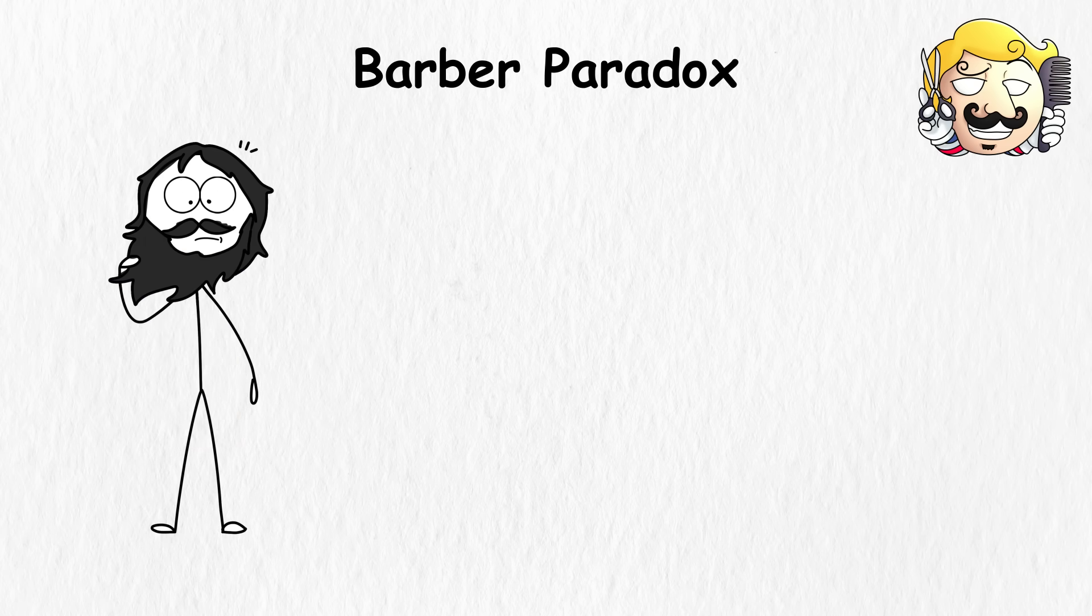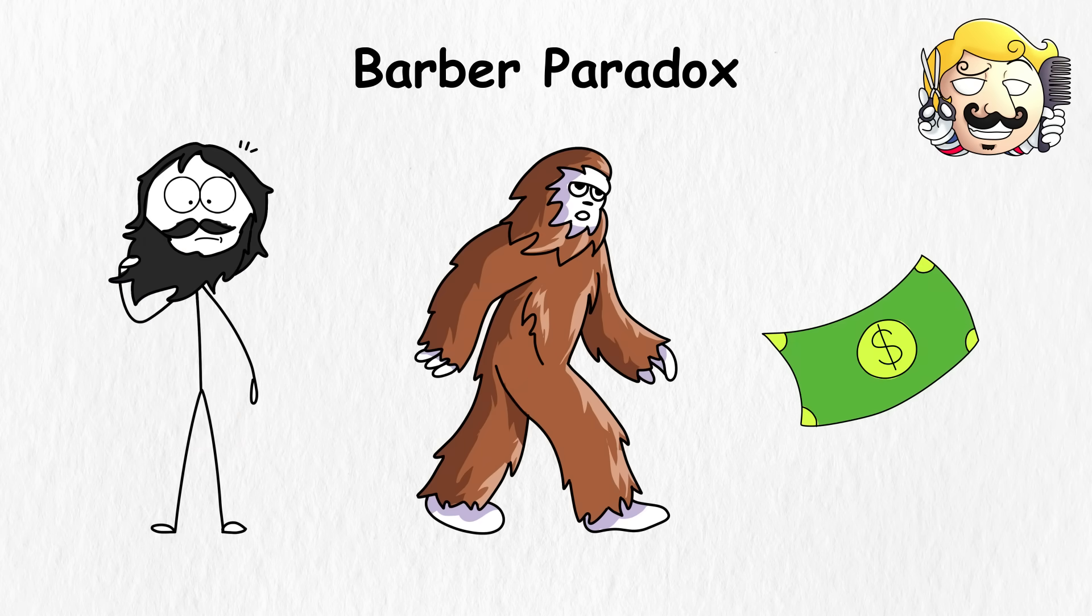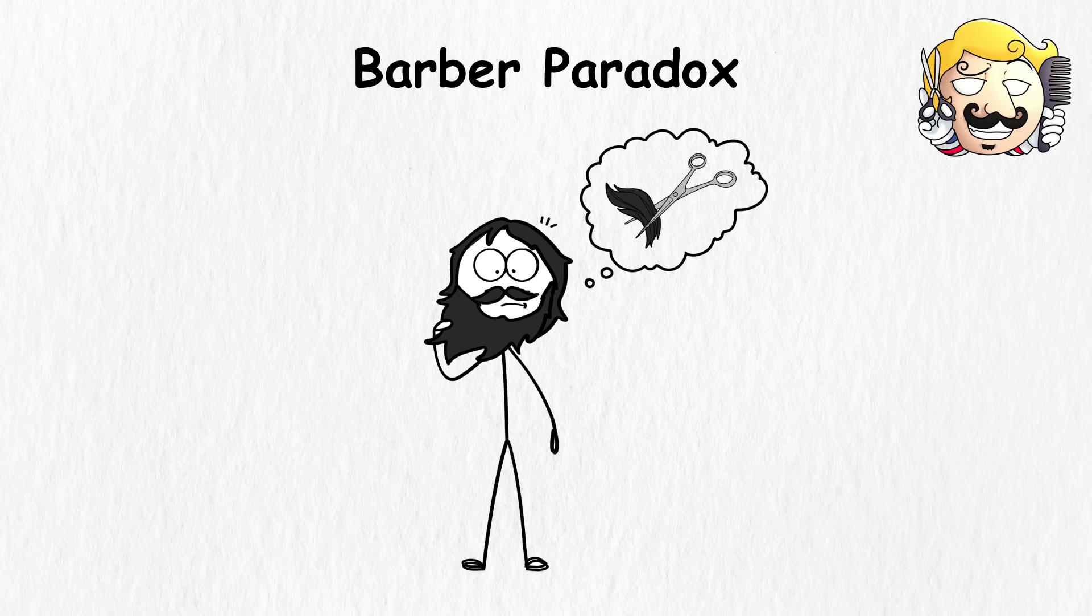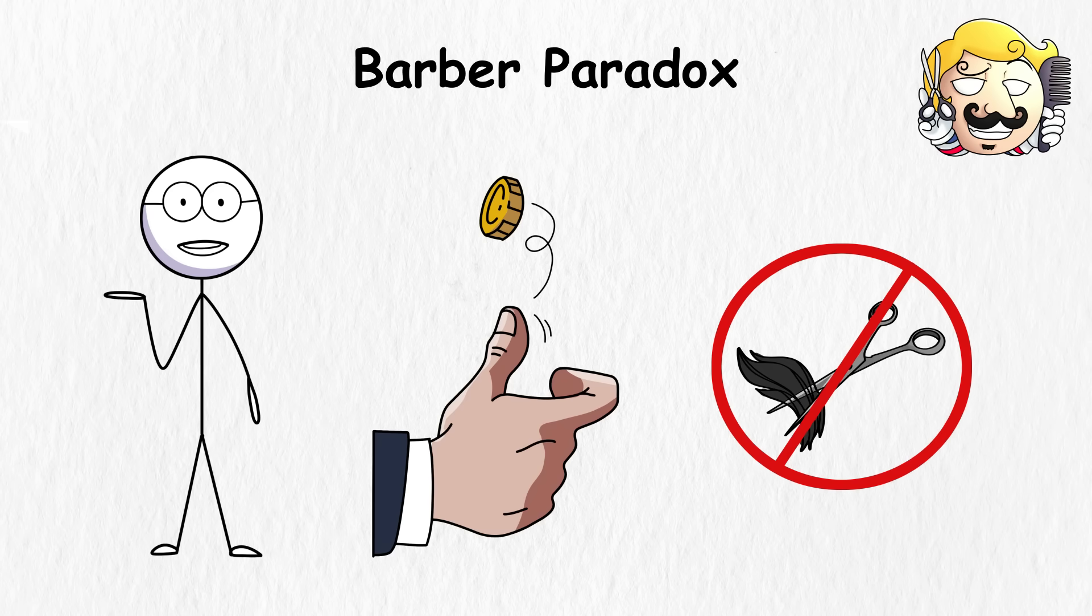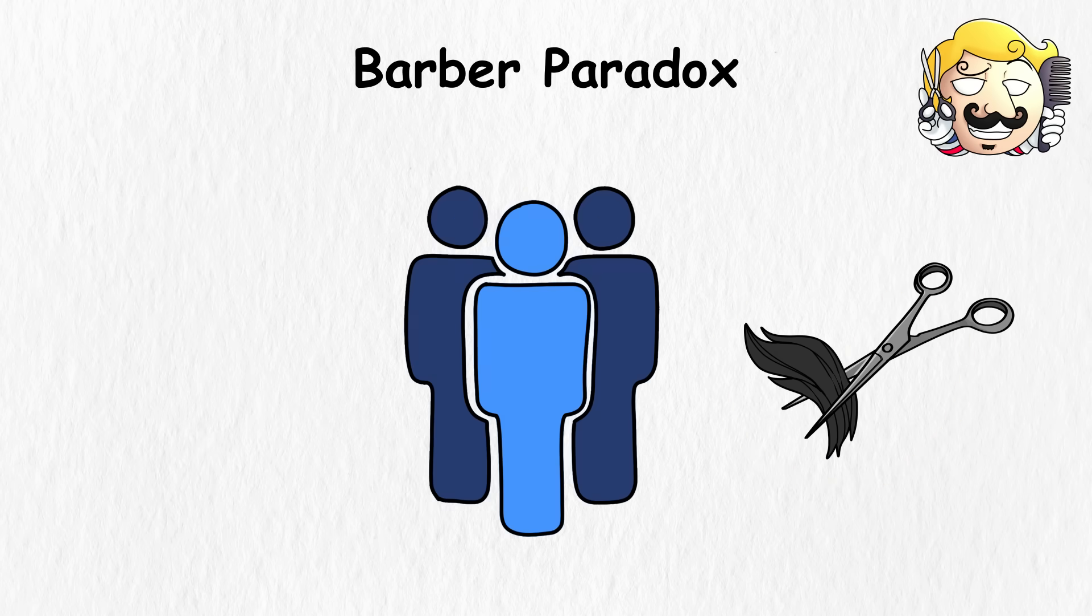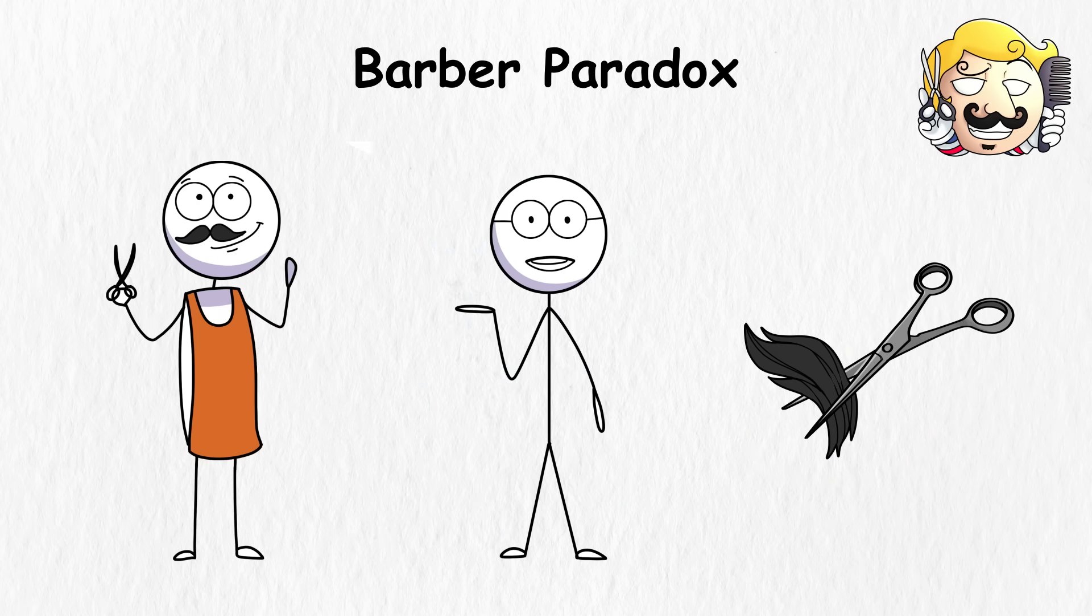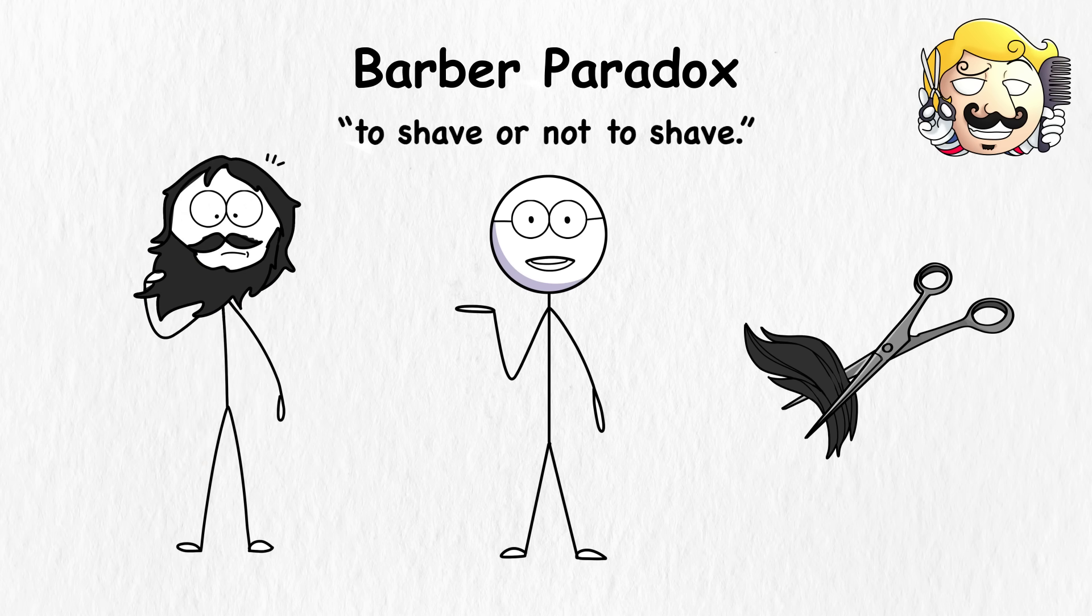One morning, Bob realizes that his hair and beard have become too long, that he could give Bigfoot a run for his money. That's when he wondered if he should shave himself. But if he did, he would violate his rule of shaving only those who don't shave themselves. On the flip side, if Bob doesn't shave himself, he falls under the category of people who need to be shaved by Bob. So it becomes a classic case of to shave or not to shave. He's now in a hairy predicament.